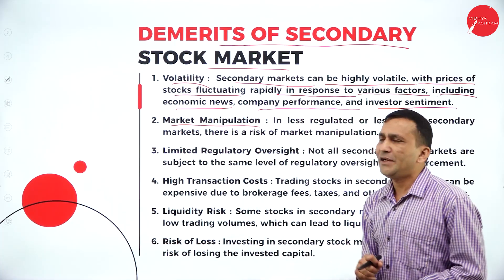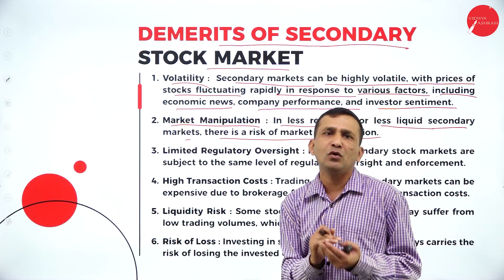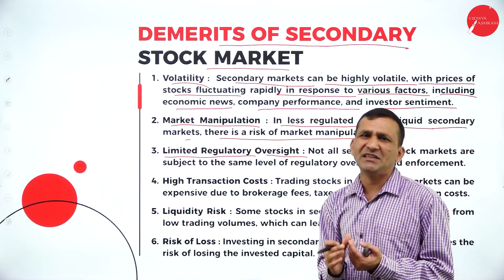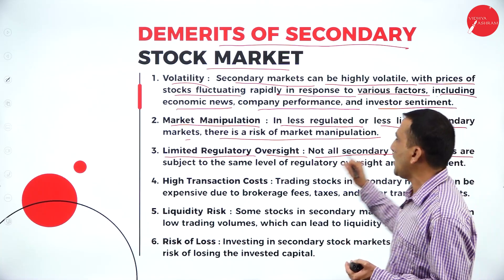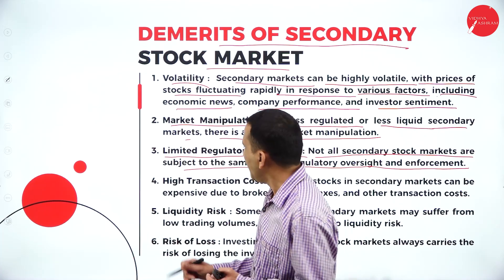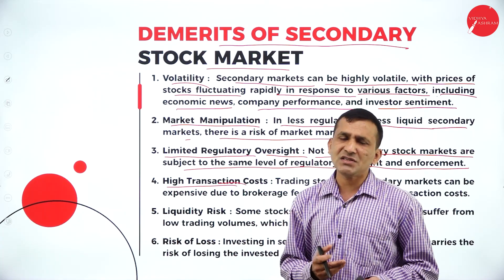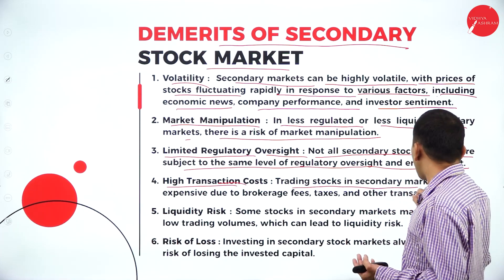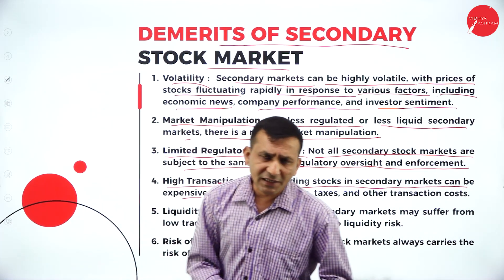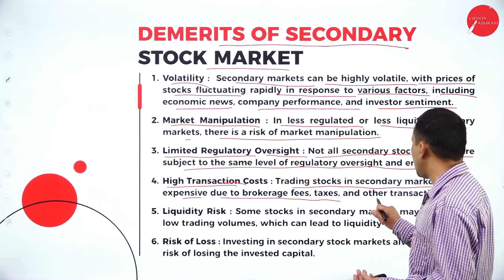Next: market manipulation. In less regulated or less liquid secondary markets, there is a risk of market manipulation. Next: limited regulatory oversight. The secondary market regulatory oversight is limited compared to the primary market. Not all secondary markets are subject to the same level of regulatory oversight and enforcement — there are different rules and regulations. Next: high transaction cost. When you are raising capital in the security market, the cost of issuances is very high compared to other instruments. Trading stock in the secondary market can be expensive due to brokerage fees, underwriting commission, cost of printing prospectuses, application costs, and taxes and other transaction costs.